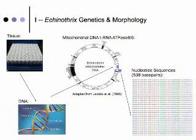To examine my specimens genetically, I dissected gonad tissue from which I extracted DNA. I then amplified a portion of the mitochondrial DNA using polymerase chain reaction. The portion of the DNA that I amplified is a gene that exhibits variability useful for examining evolutionary relationships, such as those between species. My amplicons were sequenced in both directions, yielding 539 base pairs of nucleotides for each specimen.